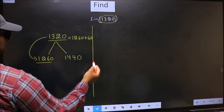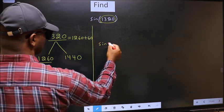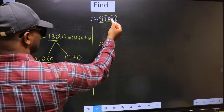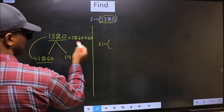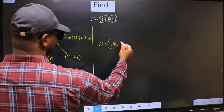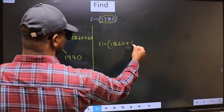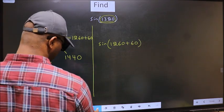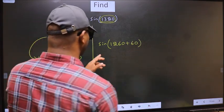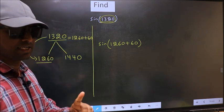So this now should be written as 1260 plus 60. So this will become sine. In place of this, we should write 1260 plus 60. This is your step 1.